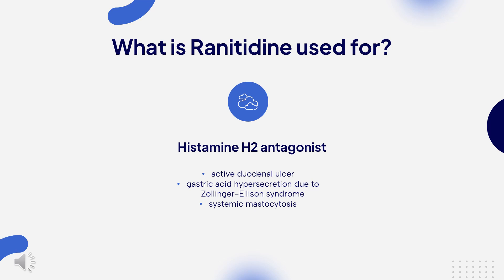This drug is used alone or with concomitant antacids for the following conditions: short-term treatment of active duodenal ulcer; treating gastric acid hypersecretion due to Zollinger-Ellison syndrome, systemic mastocytosis, and other conditions that may pathologically raise gastric acid. It is also used in the short-term treatment of active benign gastric ulcers and maintenance therapy of gastric ulcers at a reduced dose.